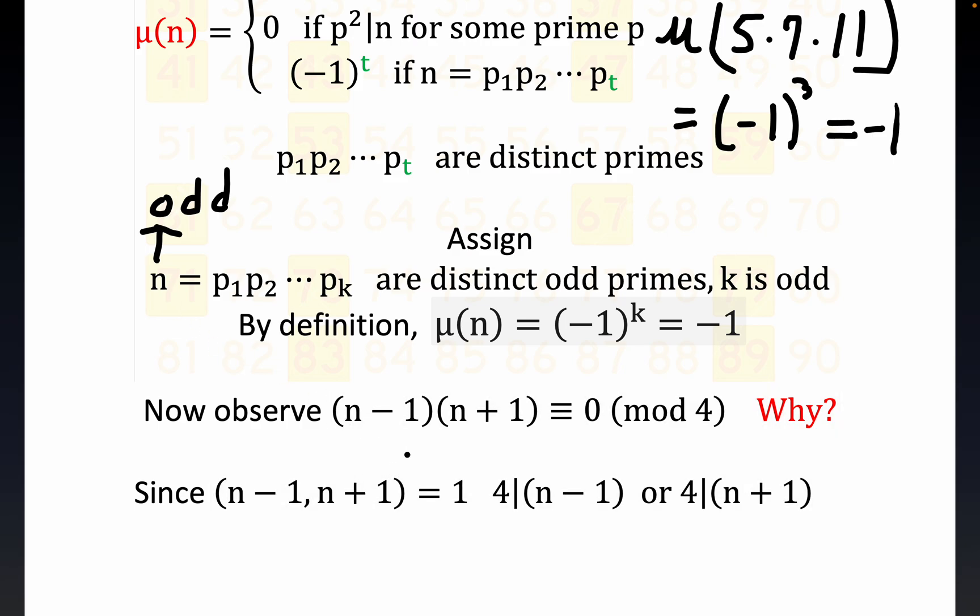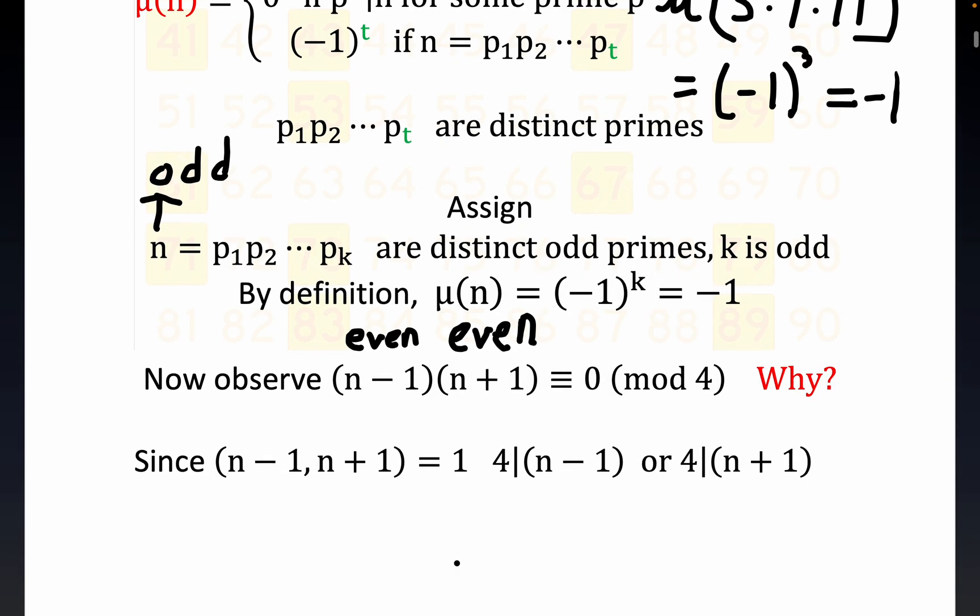n is odd, so both n minus 1 and n plus 1 are even. That answers the why question. An even number times an even number is divisible by 4. This is the congruential modular arithmetic way to do this. This really says (n-1)(n+1) ≡ 0 (mod 4).